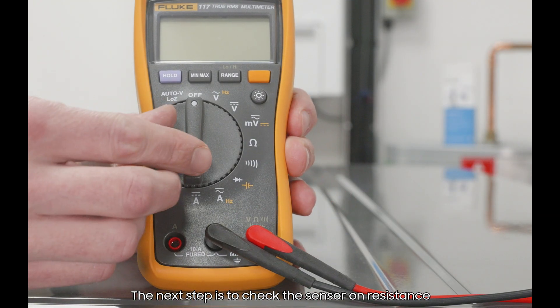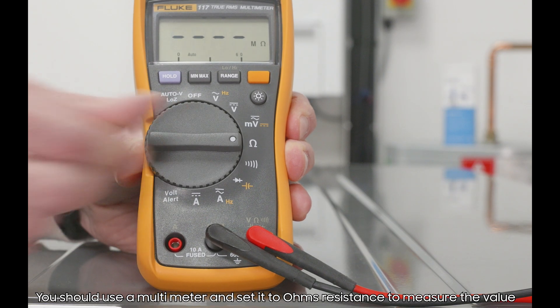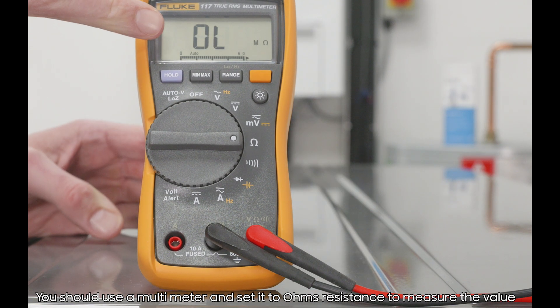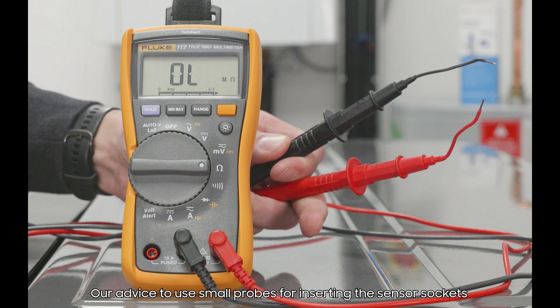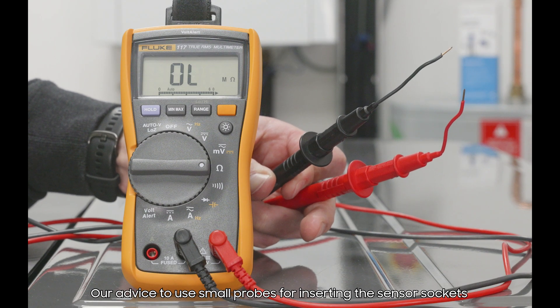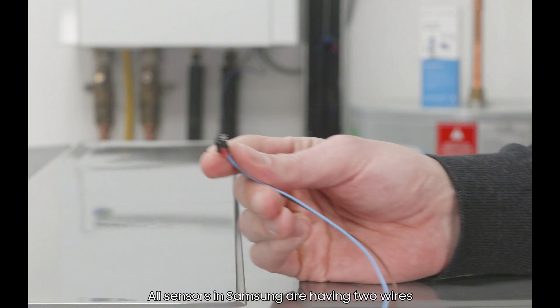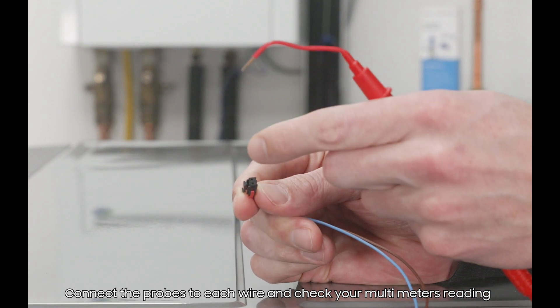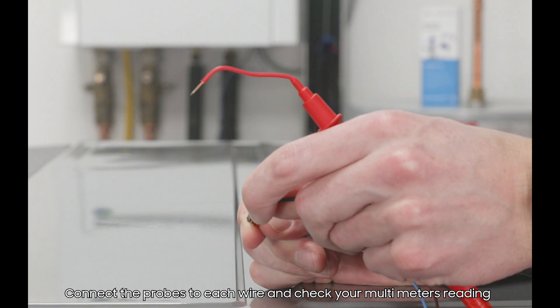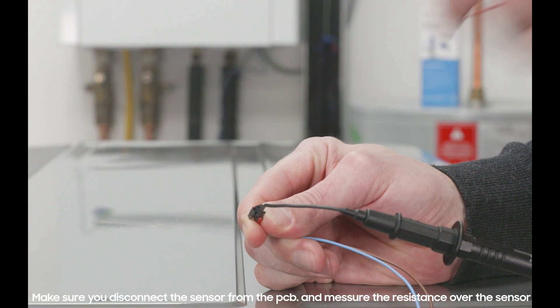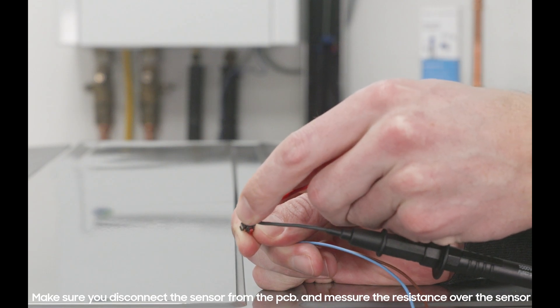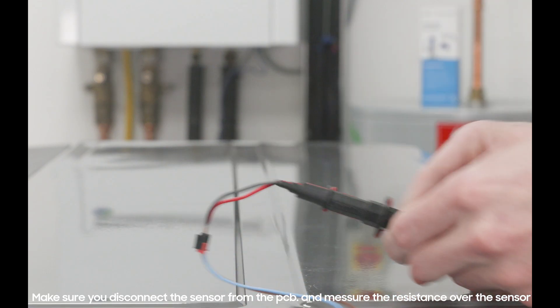The next step is to check the sensor resistance. You should use a multimeter and set it to ohms to measure the resistance value. Our advice is to use small probes for inserting the sensor sockets. All sensors in Samsung are having two wires. Connect the probes to each wire and check your multimeter's reading. Make sure you disconnect the sensor from the PCB and measure the resistance over the sensor.